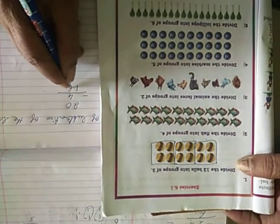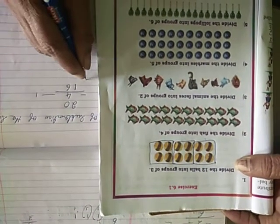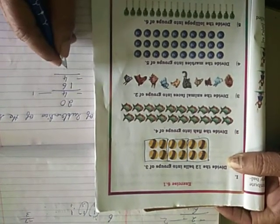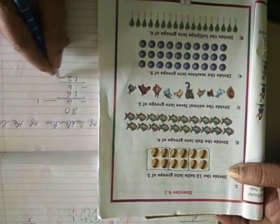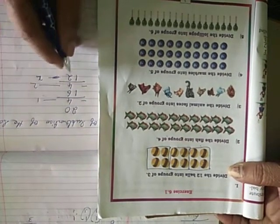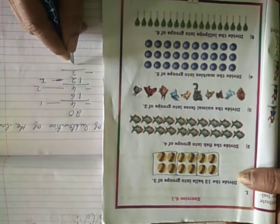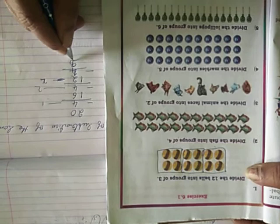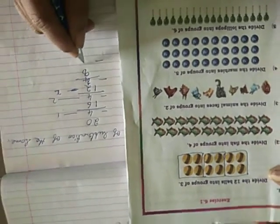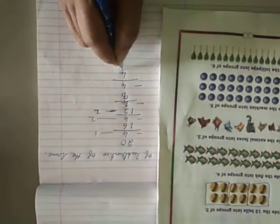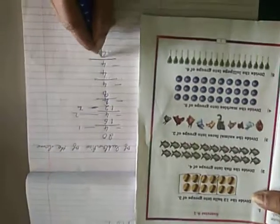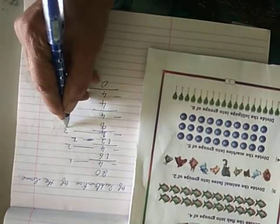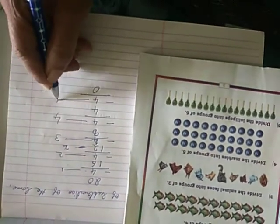20 minus 4 is 16. This is 1. Again minus 4, 16 minus 4 is 12. This is 2. 12 minus 4 is 8. Again 8 minus 4 is 4. Again minus 4 is 0. This is 1 time, 2, 3, 4, 5.